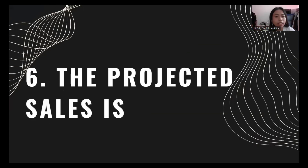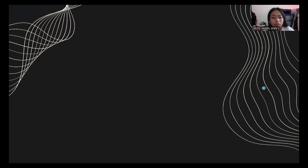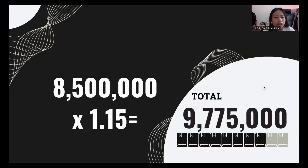Number six, the projected sales. Sales of 8,500,000 multiplied by the expected increase in sales of 1.15 equals 9,775,000. So the projected sales is 9,775,000.